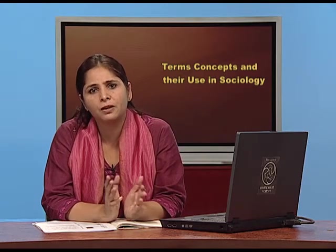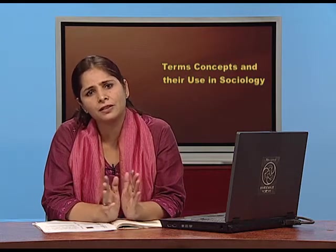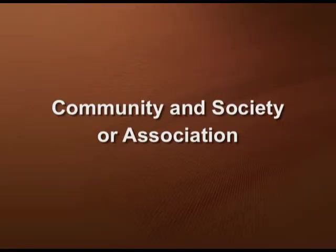In a secondary group, the punishment is written and fixed for breaking any sort of rules. Now let's talk about community and society or association. In a community, human relationships are highly personal, intimate, and enduring, and a person's involvement is considerable. Society or association refers to the opposite — interaction is very impersonal, superficial, and relationships are very transitory, reflecting modern urban life. Community falls under the primary group category, while association falls under the secondary group with impersonal relations and fixed rules.